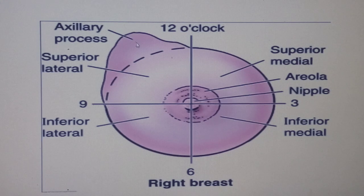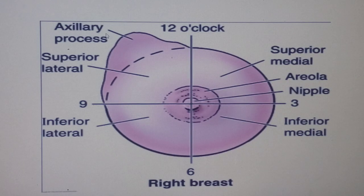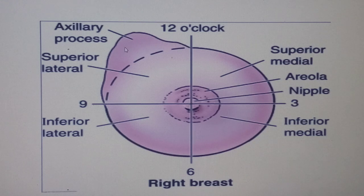The breast tissue lies in the superficial fascia, but the upper lateral quadrant bears a process or extension. That extension is what you call the axillary tail, or the axillary process — also called the axillary tail of Spence (S-P-E-N-C-E), someone's name, so it begins with a capital S.